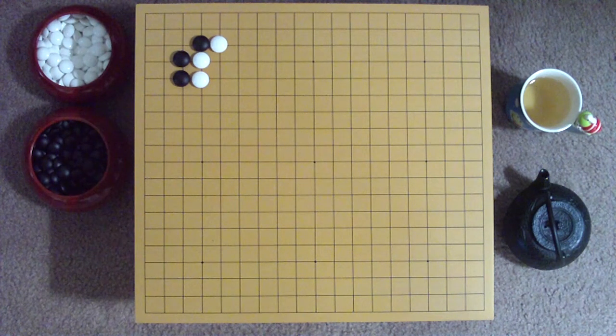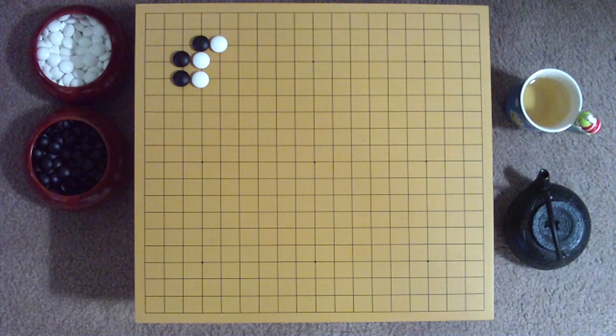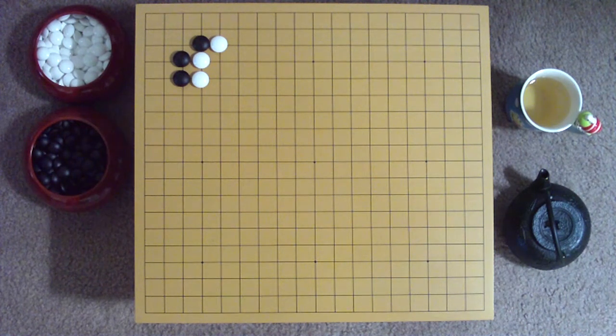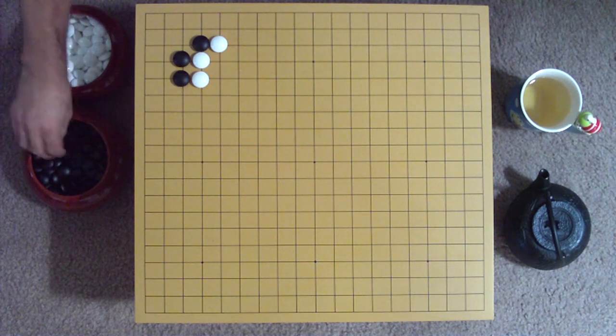This is known as the avalanche method, called nadare joseki in Japanese. Play cannot end here, as Black is left vulnerable to cutting at the 3-3 point. Black has four main points to choose from for the next play.